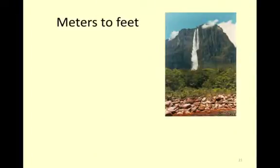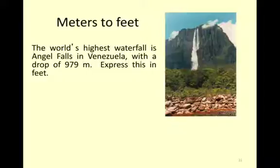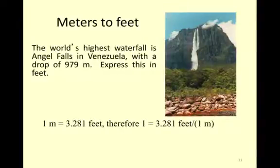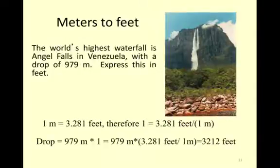Meters to feet: the world's highest waterfall is 979 meters — that is really tall. 1 meter is 3.281 feet. Therefore, multiply 979 times 3.281, which gives about 3,000 feet — that's almost two-thirds of a mile.